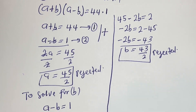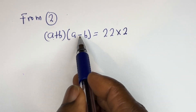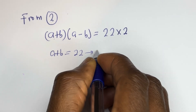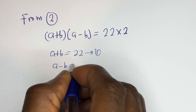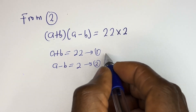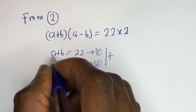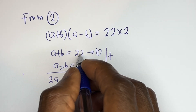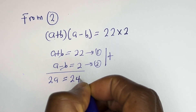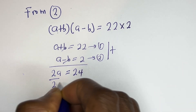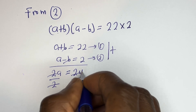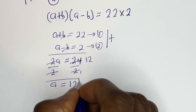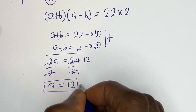Now let's consider the second case: (a + b)(a − b) = 22 × 2. So a + b = 22 (equation 1) and a − b = 2 (equation 2). Using the elimination method, adding both equations: 2a = 24, so a = 12. Is a = 12 a natural number? Yes, it is a natural number and it is accepted.